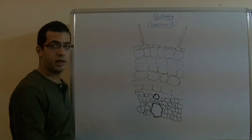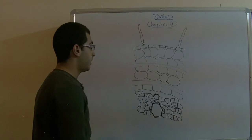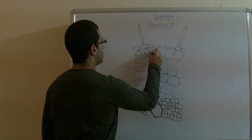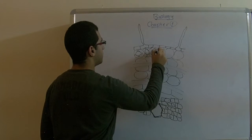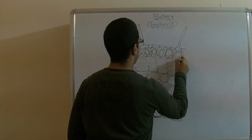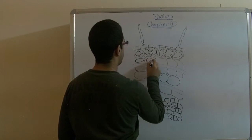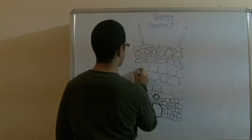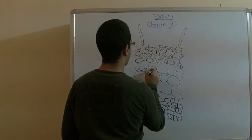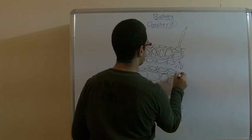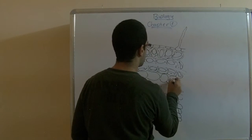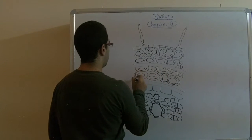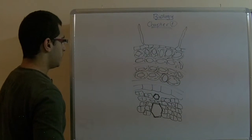Here we have the cells containing sap vacuoles and chloroplasts. Draw a circle with points surrounding them to resemble the grana.